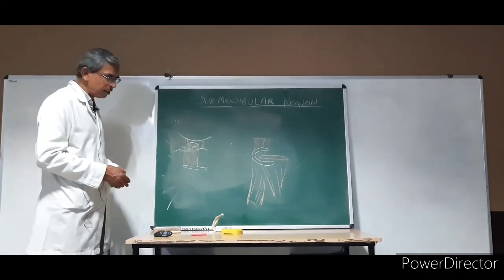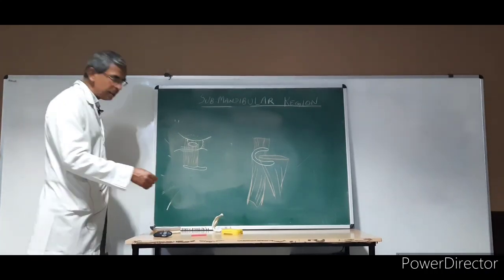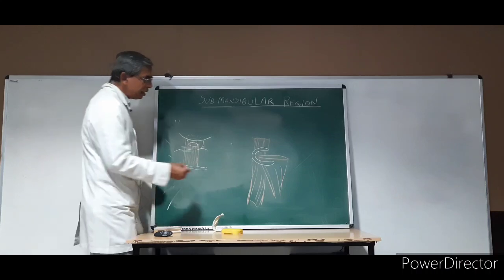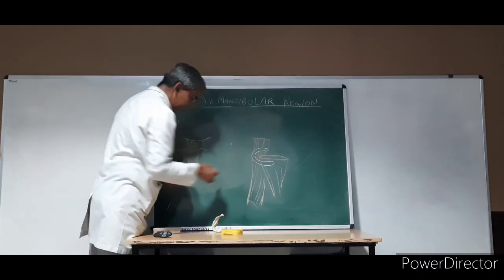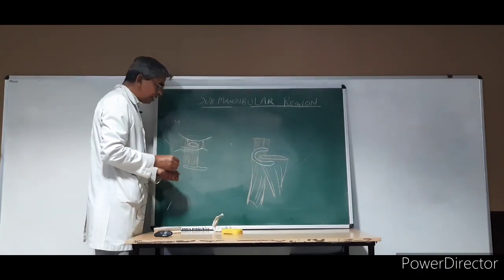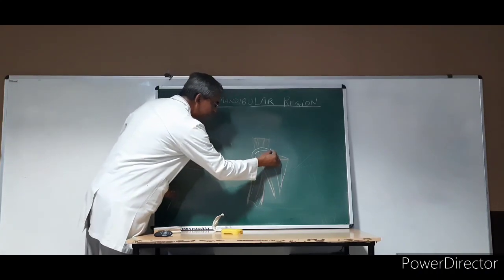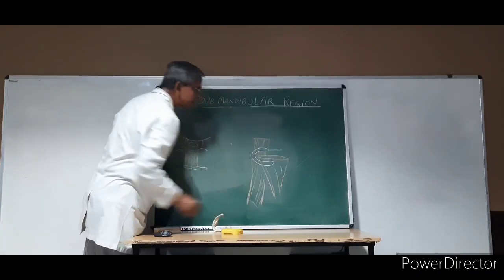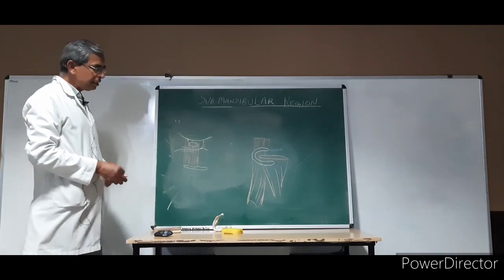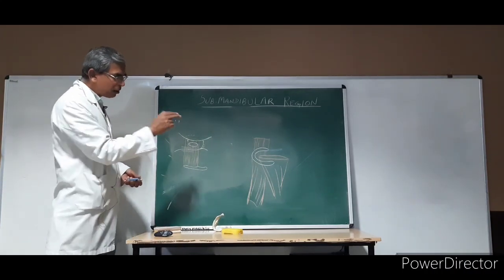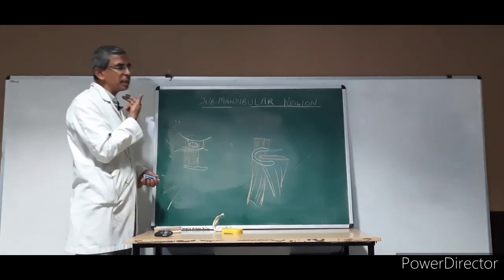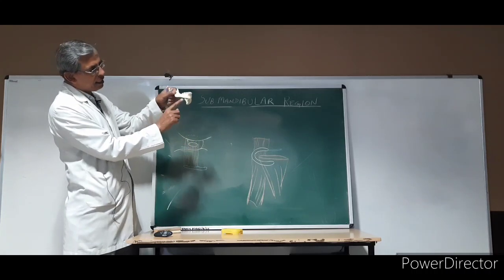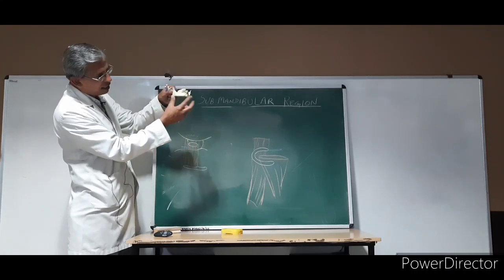Now, the submandibular duct — what about the submandibular duct? The submandibular duct starts from the deeper part of the gland, and ascends upward and backward. The deeper part of the gland is here; it passes upward and backward.